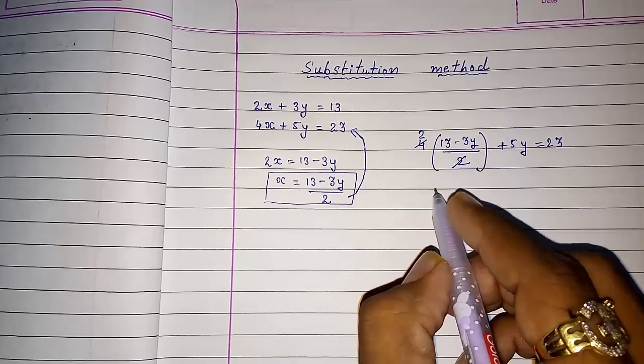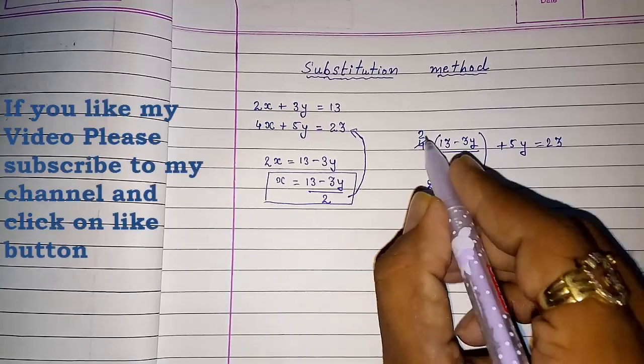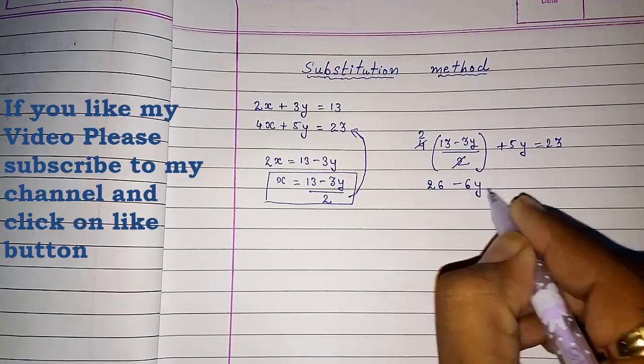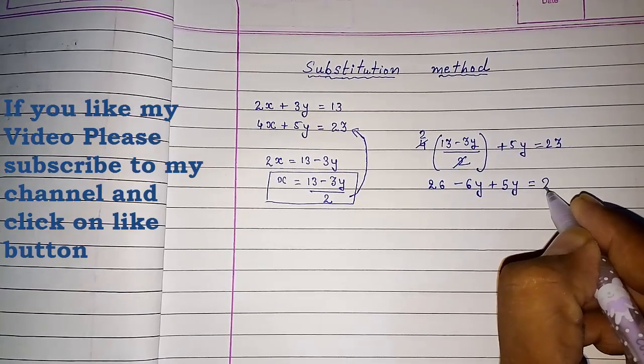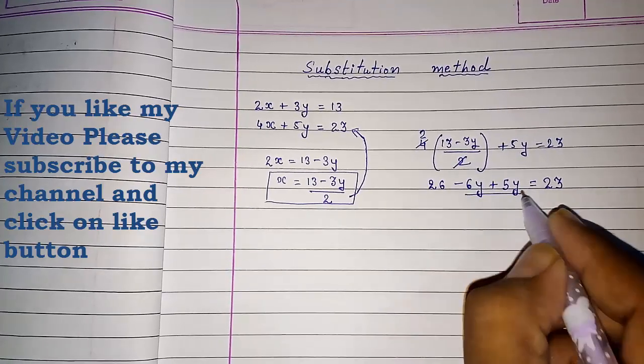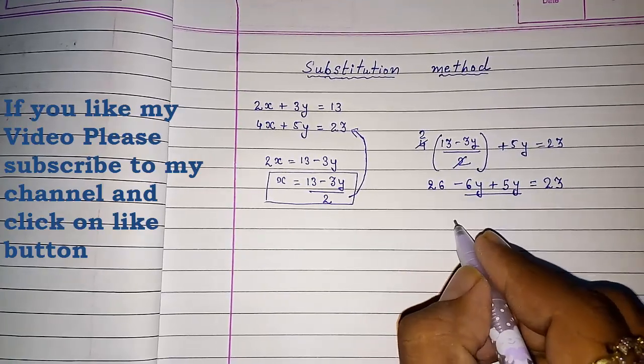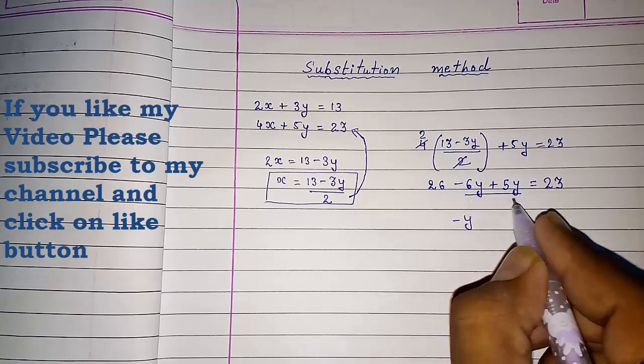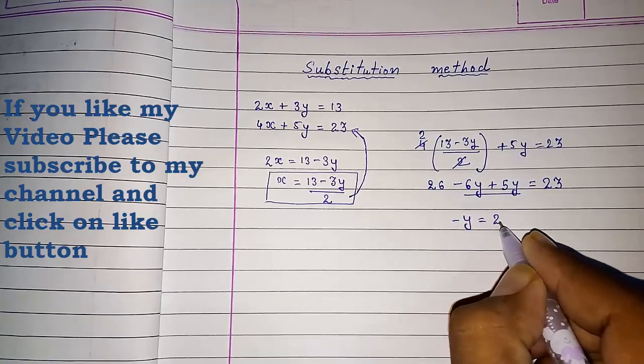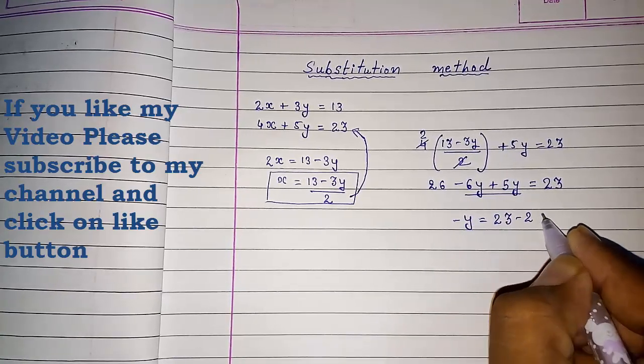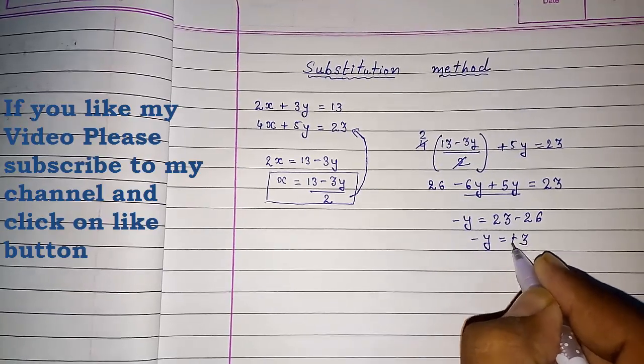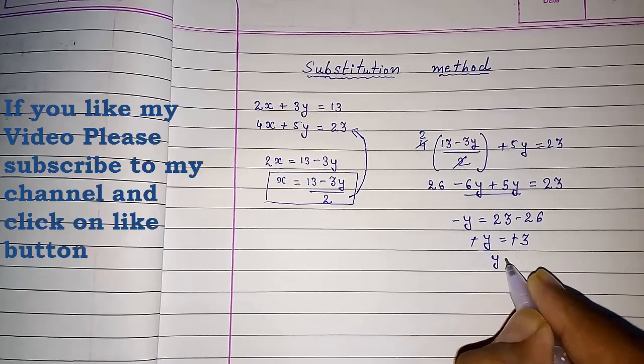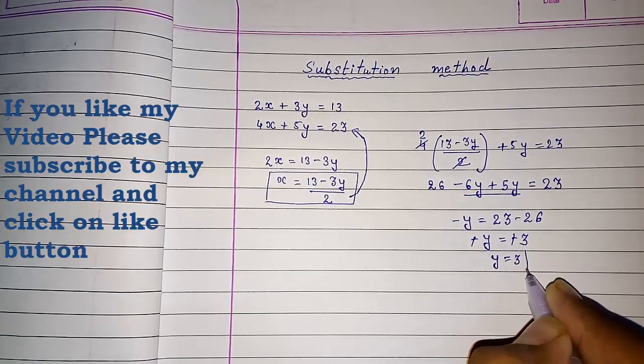2 is outside the bracket, so we will multiply: 2 × 13 = 26, 2 × (-3y) = -6y, plus 5y = 23. These two are like terms, so -6y + 5y = -y, and 26 goes to the other side: -y = 23 - 26 = -3. Minus cancels minus, so y = 3.